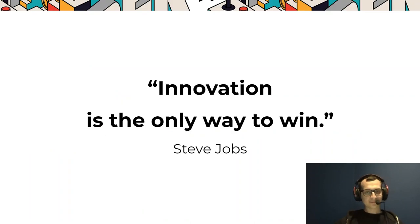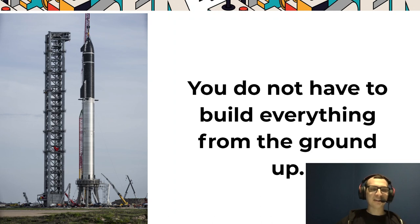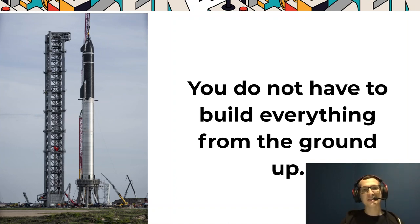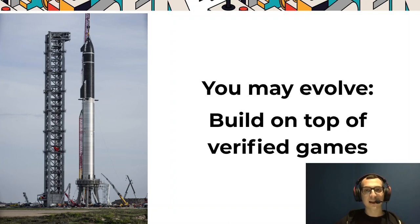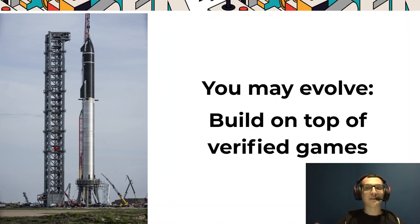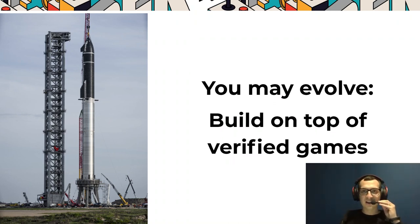Number one is lack of innovation. Steve Jobs said that innovation is the only way to win. It doesn't mean you need to build something completely new that nobody has ever seen. Building a huge fully reusable rocket like Elon Musk — that's a crazy amount of innovation with extremely high fail probability. You should build your innovation on evolvement, on top of verified things. If you analyze top-grossing games, they are usually not crazy complicated.